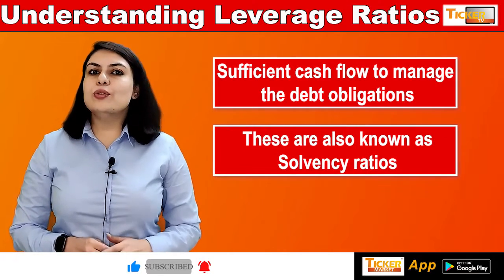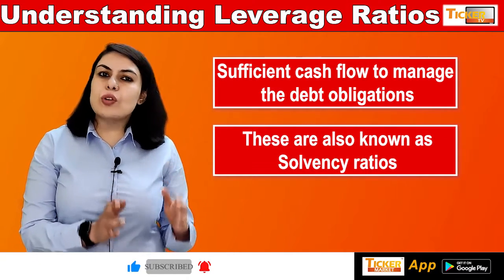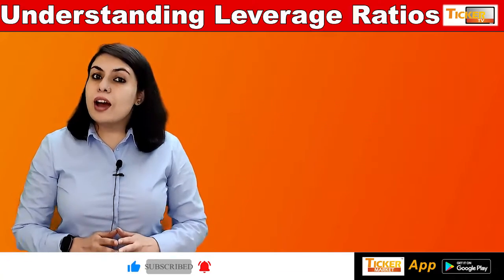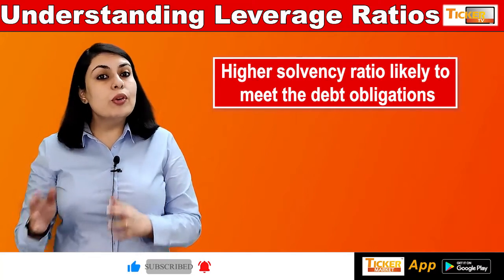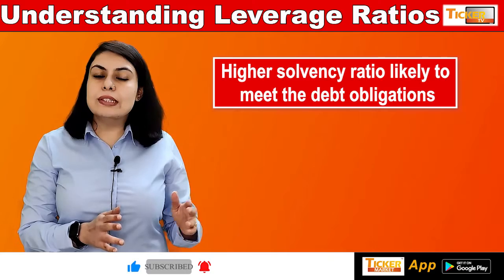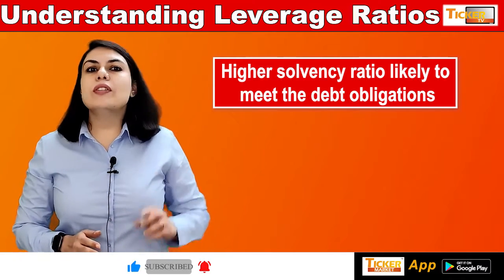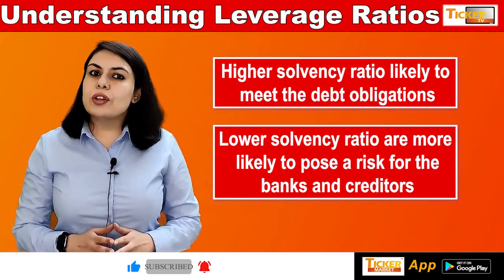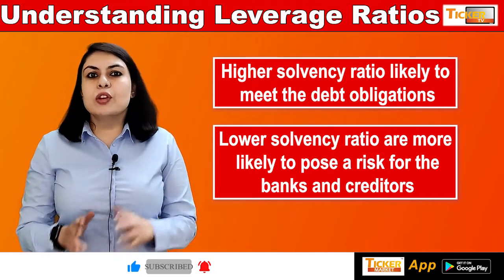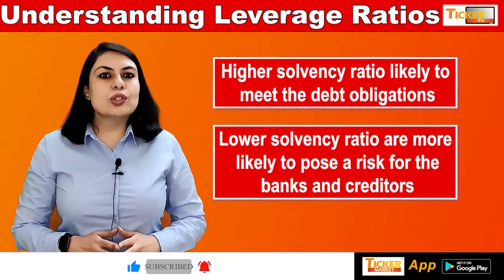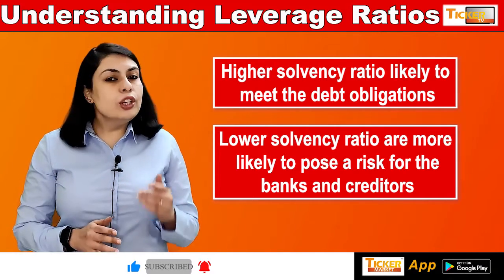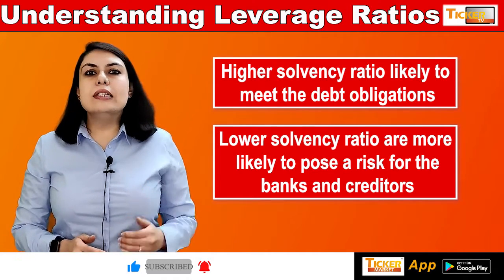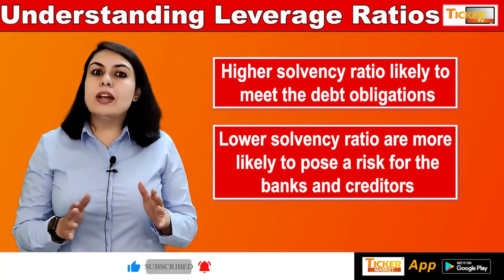These ratios are used by lenders to determine the solvency state of the business. Companies that have a higher solvency ratio are deemed more likely to meet the debt obligations, while companies with a lower solvency ratio are more likely to pose a risk for banks and creditors. Solvency ratios vary with different industries. Usually a solvency ratio of 0.5 is considered a good number to have.